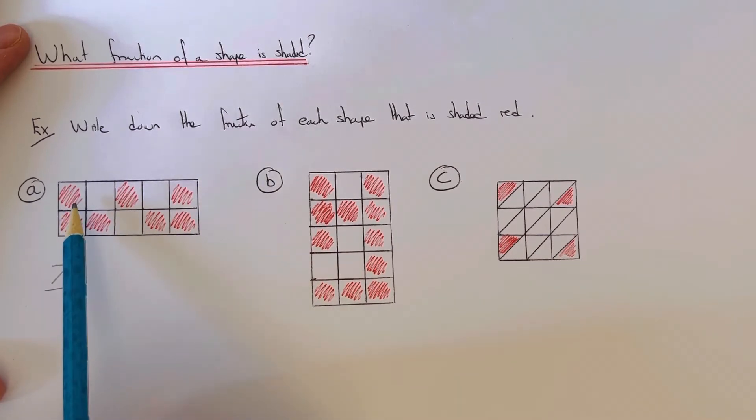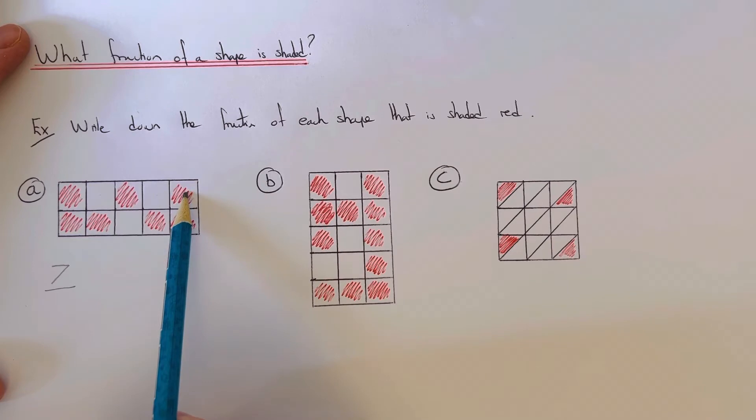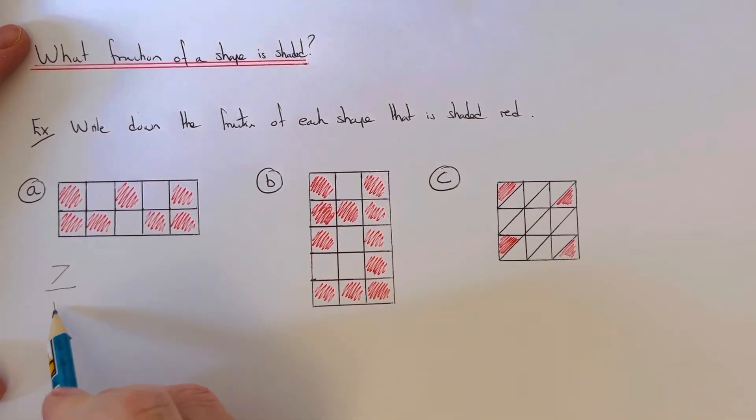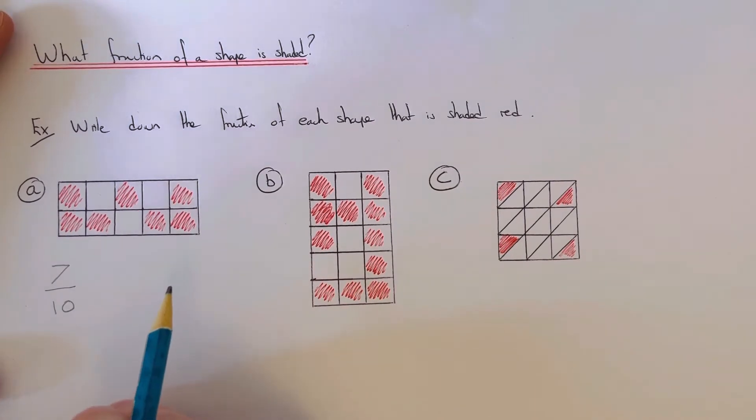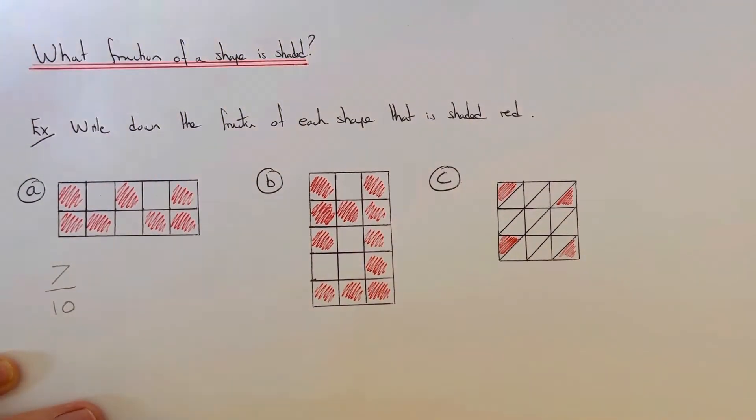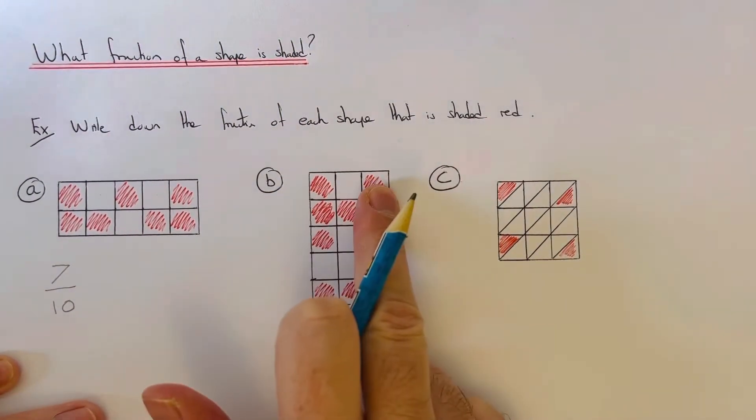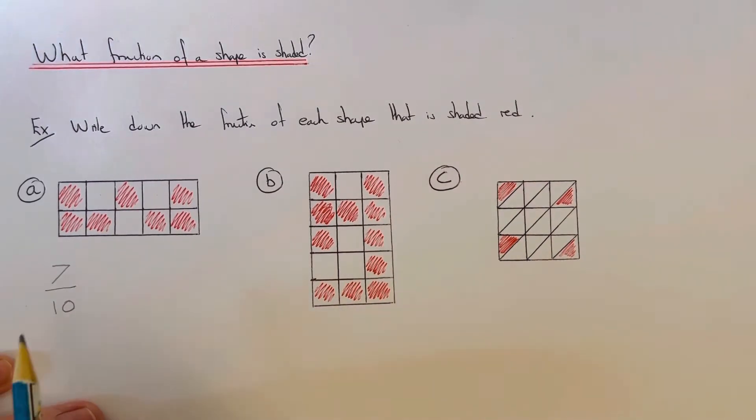We've got one, two, three, four, five, six, seven, eight, nine, ten. So seven-tenths of this shape is shaded. So let's have a look at part B then.